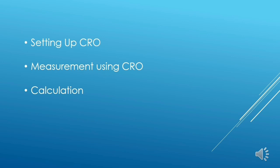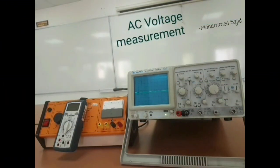We will take readings using CRO and then calculate the RMS value of AC voltage. RMS means root mean square value. The instantaneous value of AC voltage is continuously changing, so we cannot measure it directly. Instead, we are going to calculate the RMS value of the voltage. After setting up the CRO, we will connect the circuit to measure AC voltage.